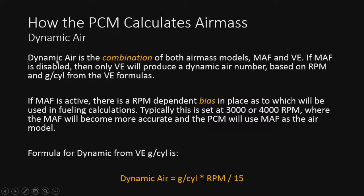Let's cover dynamic air real quick. So basically it's a combination of both the air mass models, MAF and VE. Now VE is also going to be used in quick transitions because the MAF just isn't fast enough to read in some cases. There's also a bias in place towards VE towards idle. So the lower RPM is going to be biased towards VE and above a certain RPM is going to be all MAF. On the bottom, we have the dynamic air from VE calculation. So dynamic air is equal to grams per cylinder times RPM divided by 15.